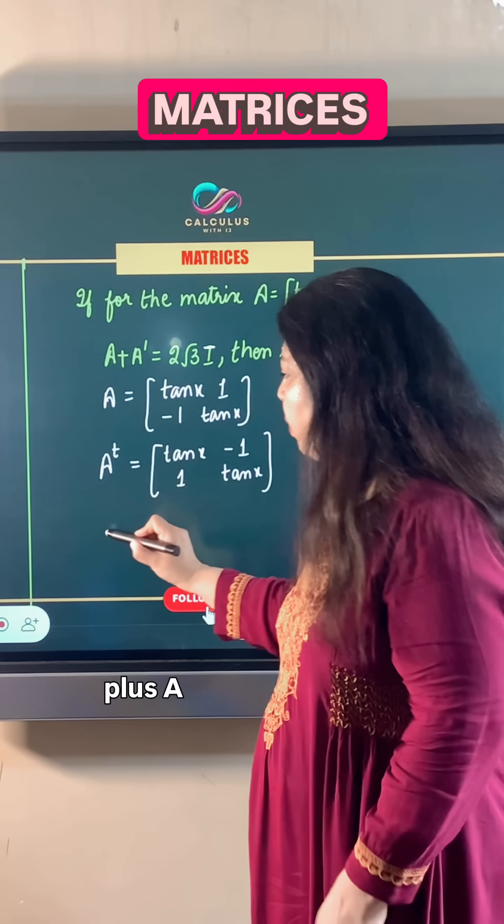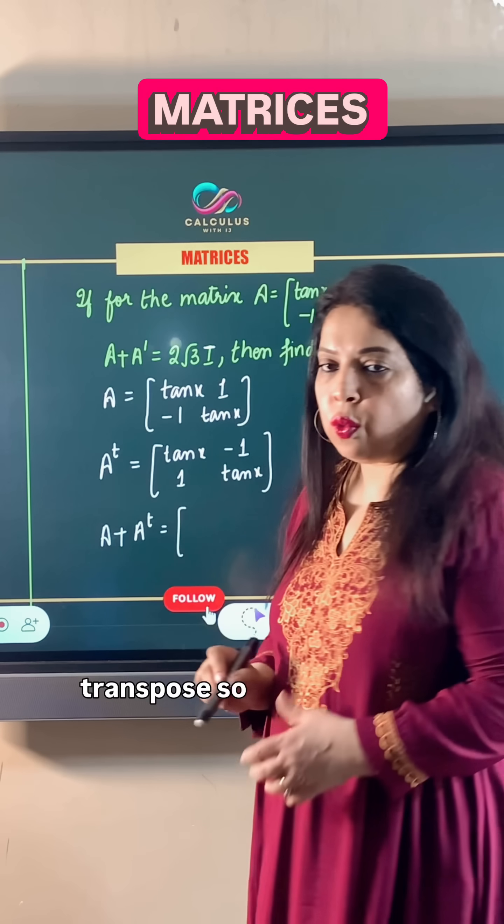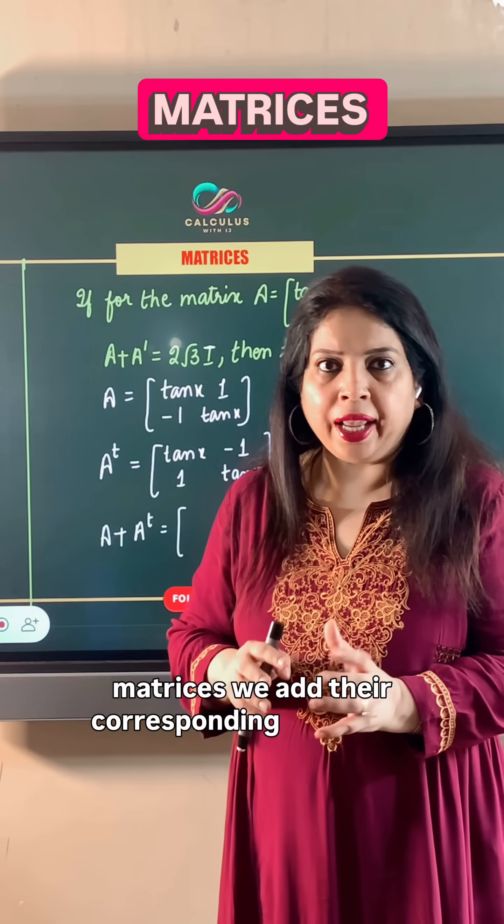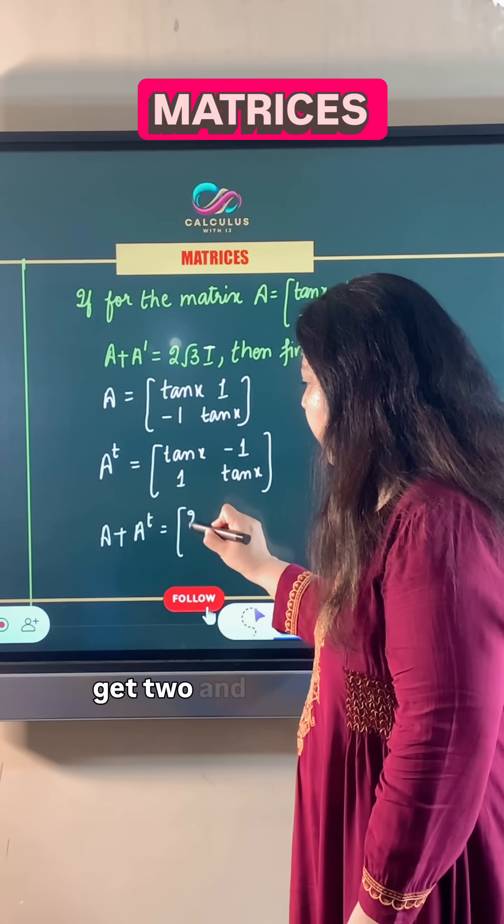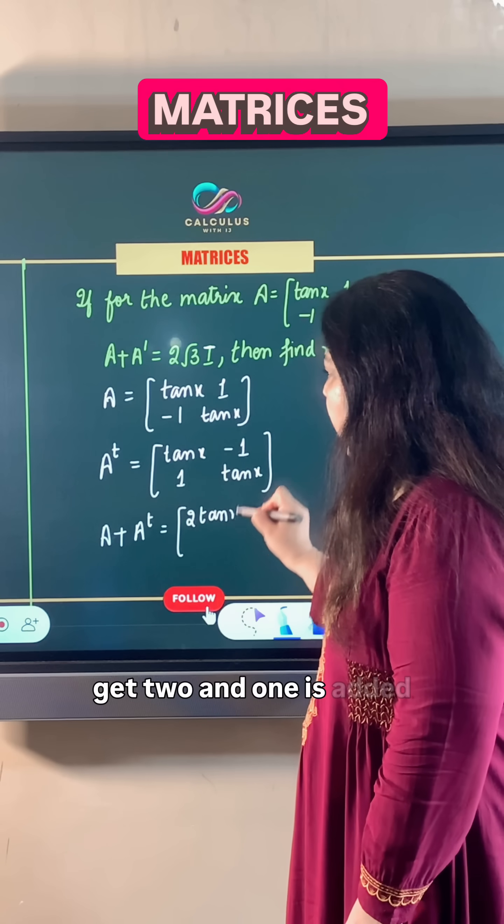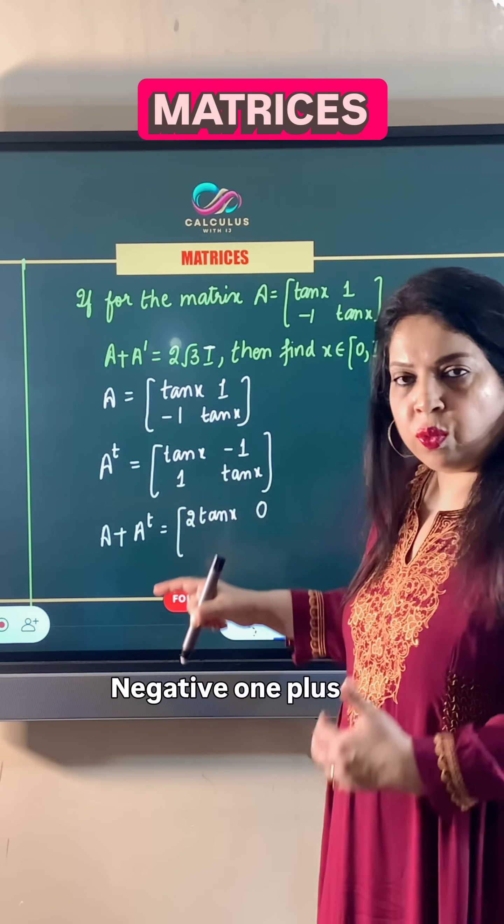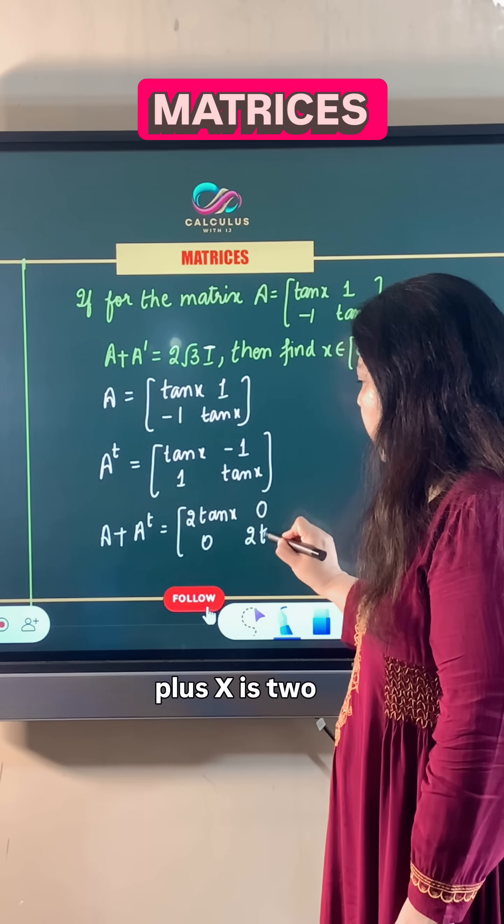Now we can add A plus A transpose. When we add matrices, we add their corresponding elements. That means tan x will be added to tan x to get 2 tan x. 1 is added to negative 1, that gives us 0. Negative 1 plus 1 also gives us 0, and tan x plus tan x is 2 tan x.